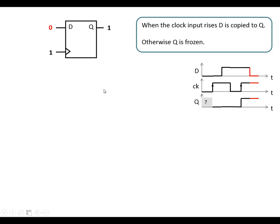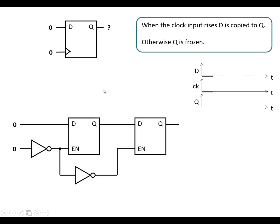Let's have a look at what's inside. These can be made using two latches and two NOT gates. Just a reminder that with the latch, if the enable input is high then Q is going to be the same as D. Let's have a look at how this works.